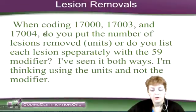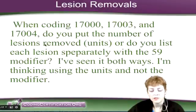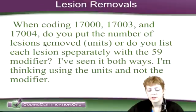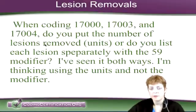When coding 17000, 17003, and 17004, do you put the number of lesions removed as units, or do you just list each lesion separately with the 59 modifier? I've seen it both ways. I'm thinking of using the units and not the modifier.